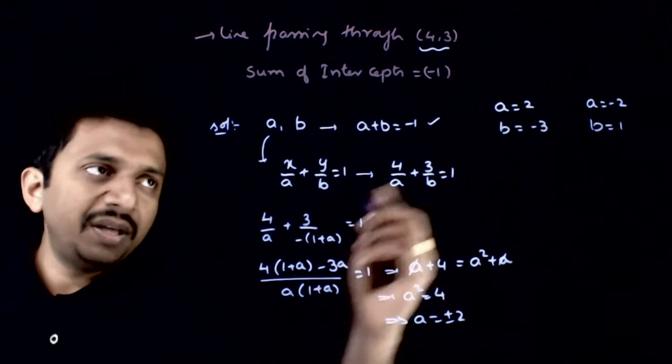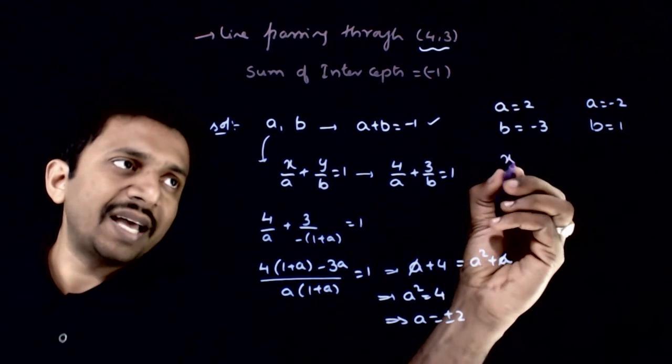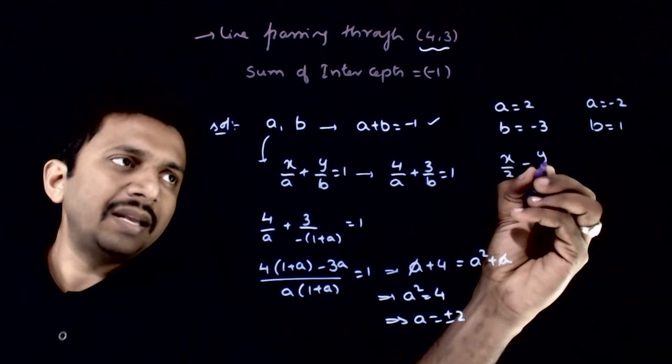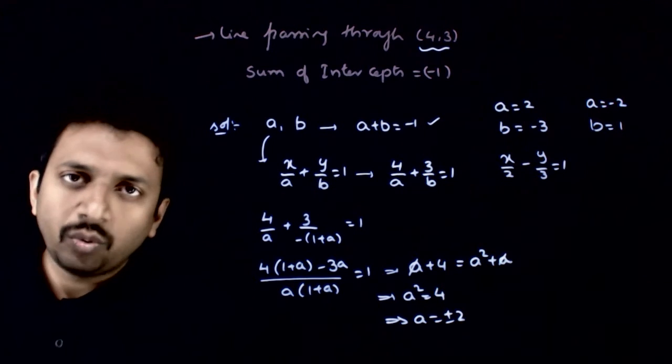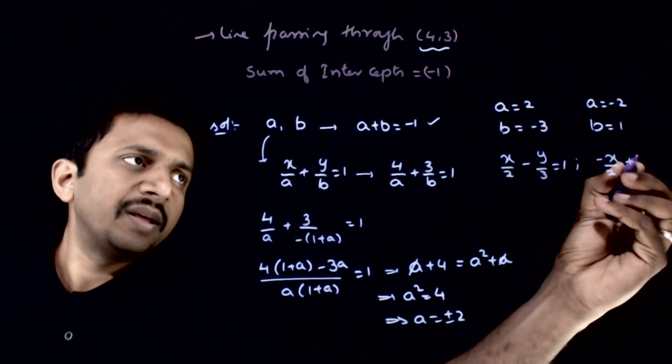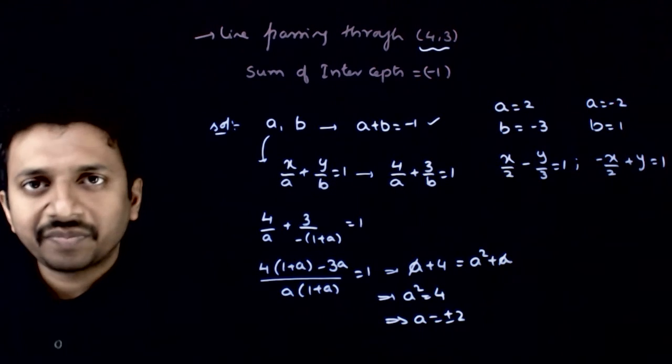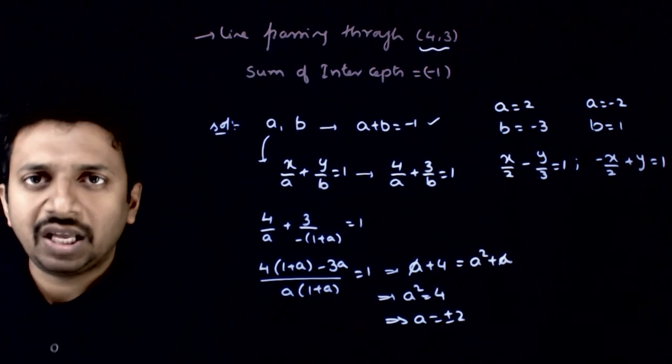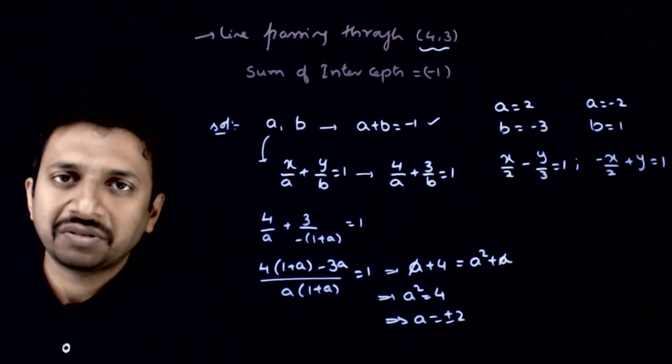Now once you have a and b, this equation is x by 2 minus y by 3 is equal to 1 and this equation is minus x by 2 plus y is equal to 1. So these are the two possible equations which satisfy the given conditions. Thank you.